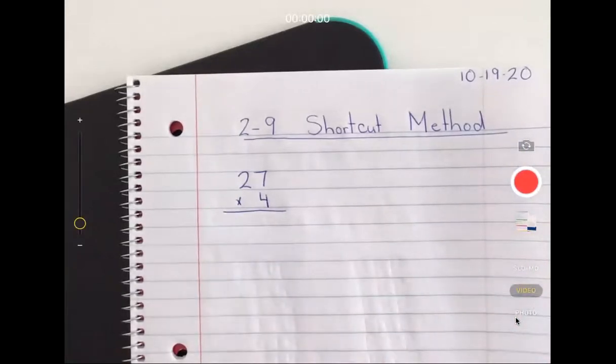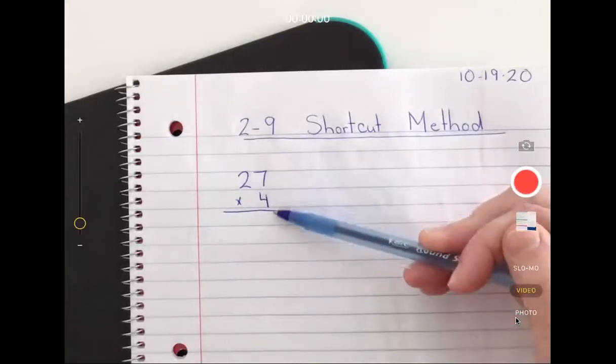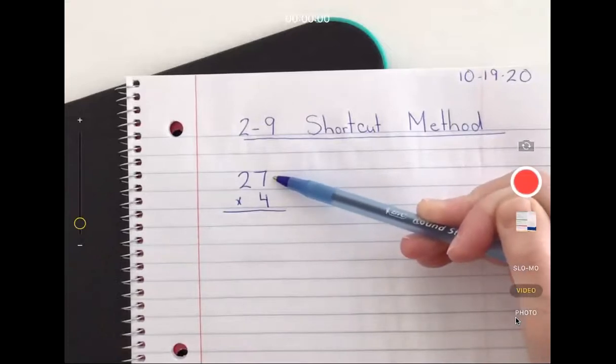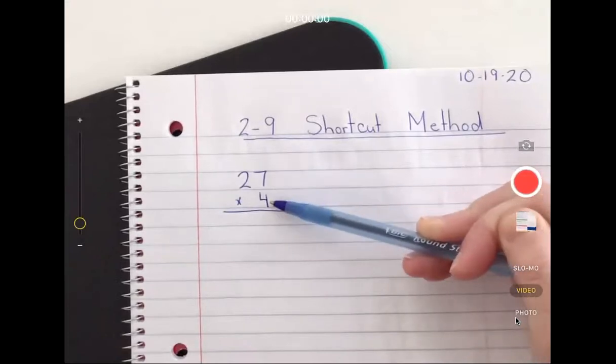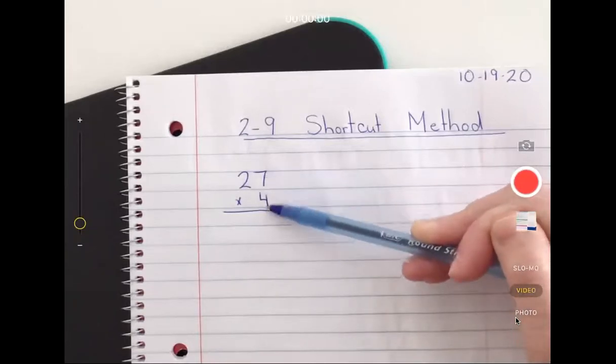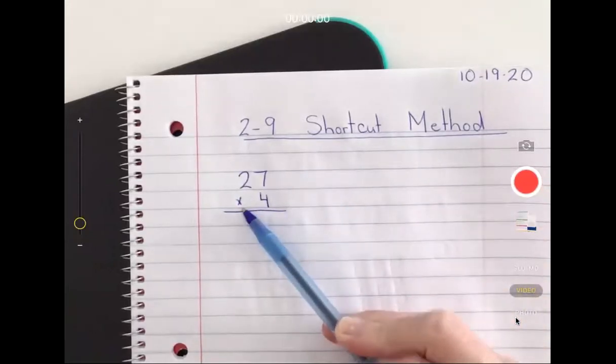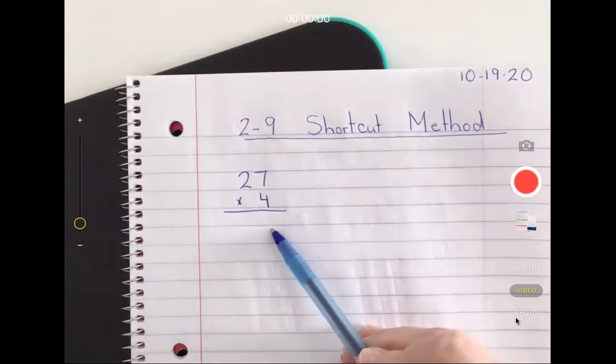Here's number one. When we do the shortcut method, we make sure our equations are lined up like this. We have our larger number on top, our single digit number on the bottom, lined up with the ones, and our multiplication sign is here with the line to separate the answer from the equation.